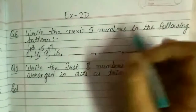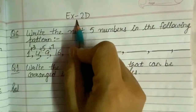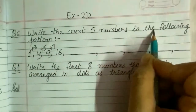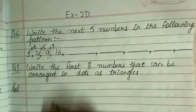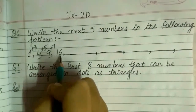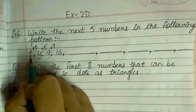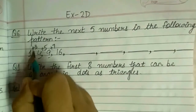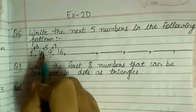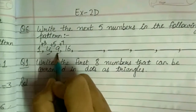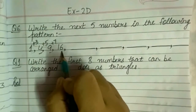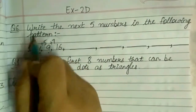Now I have taken question number 6 of exercise 2D. Question number 6 says: write the next five numbers in the following pattern — 1, 4, 9, 16, and so on. If you observe: in 1, if I add 3, I get 4; in 4, if I add 5, I get 9; and in 9, if I add 7, I get 16. So we are observing that we are adding odd numbers to get the next number.